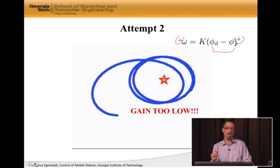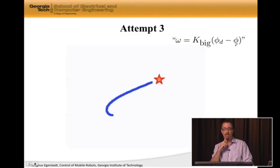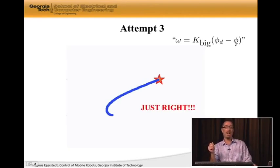So let's do the same thing, but let's make K bigger. So this is attempt three. We're doing the same thing. We have K big. And again, we have the quotations there because it's not exactly this we're doing. What we're really doing is this arc tan two trick on the error on the angles to make sure that we get something between minus pi and pi. And this is just right. This was a successful control design.